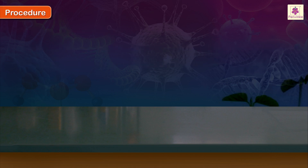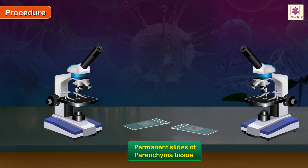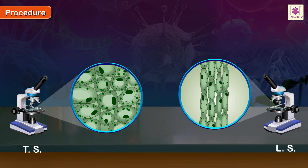Procedure: Examine the permanent slides of Parenchyma tissue under the compound microscope. Start observing first under low magnification and then under high magnification. Note down the characteristic features. Draw a labelled diagram of what you actually see through the microscope.